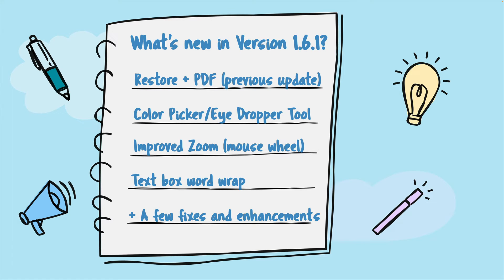Improved zoom — long overdue. Last but by no means least is text box word wrap. This is a big deal if you deal with any language fonts like Arabic or Hebrew, which scroll from right to left, whereas traditional English fonts scroll from left to right. Now you can easily reformat your text boxes. This was surprisingly a challenge — there was a whole domino effect of issues to resolve just to add word wrap. And of course, as always, a few fixes and enhancements behind the scenes, including squashing some nasty bugs. Once we hear about any issues, our team is quick to get on it and resolve them.